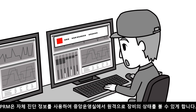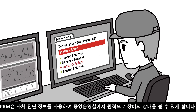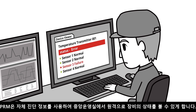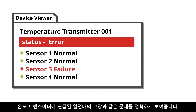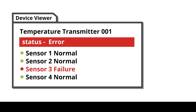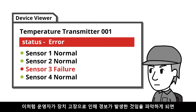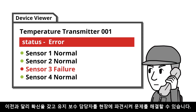PRM empowers personnel to view the status of remote equipment using self-diagnostic information at their operator stations. For example, PRM's device viewer pinpoints problems such as the failure of a thermocouple that is connected to a temperature transmitter. When an operator determines that an alarm was caused by such a device failure, they can confidently dispatch maintenance personnel to solve the problem on-site.